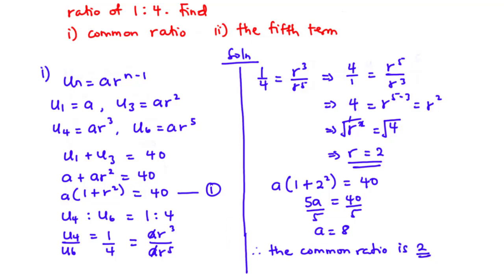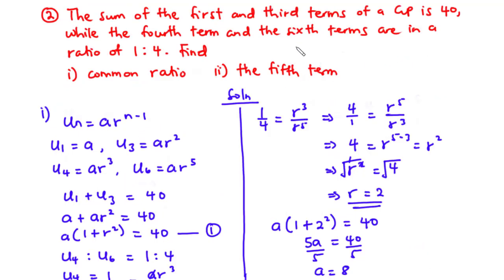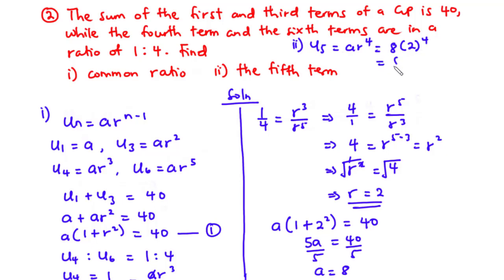For part (ii), the fifth term is u_5 = a · r^4 = 8 × 2^4 = 8 × 16 = 128. Therefore, the fifth term is 128.